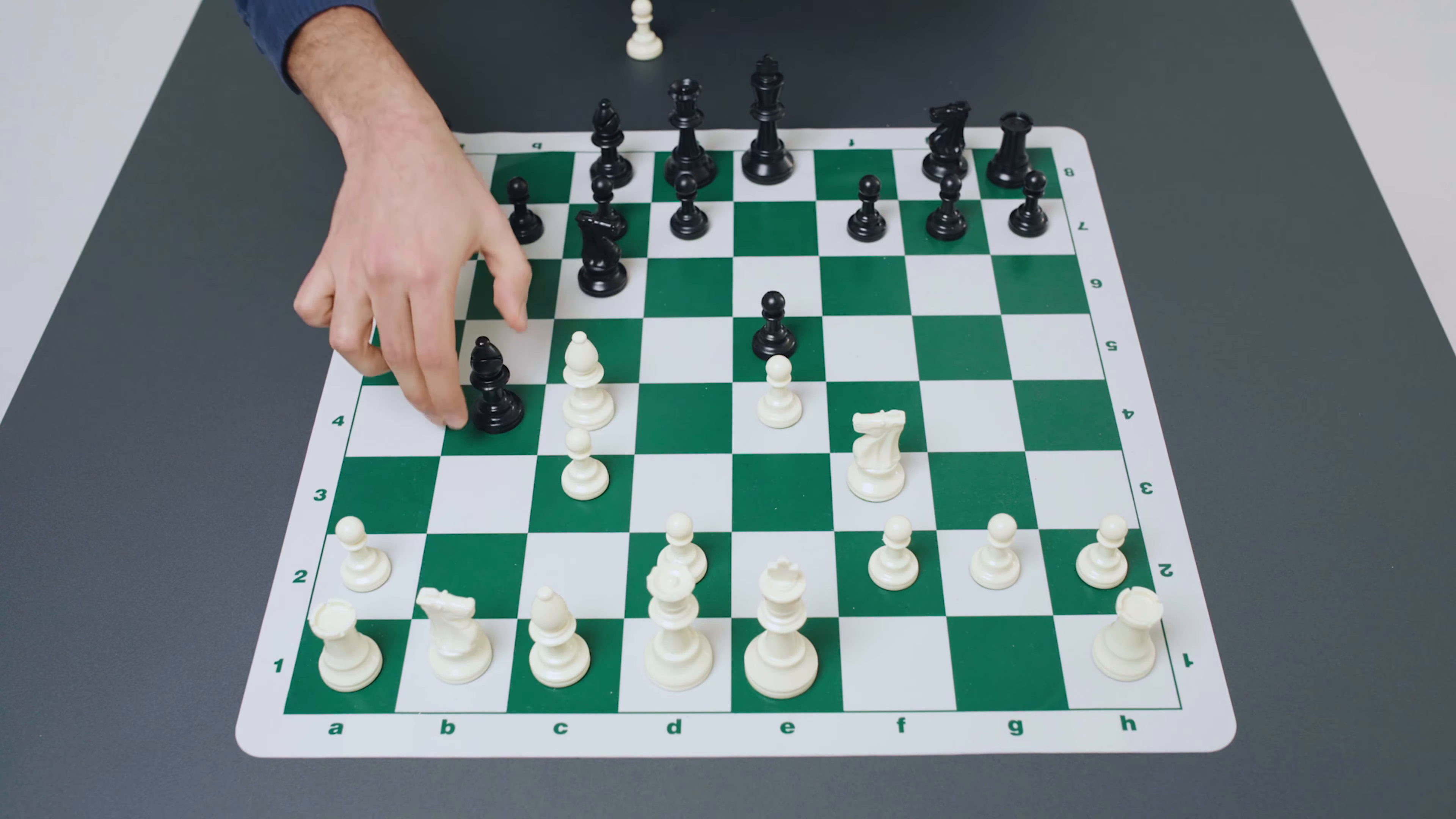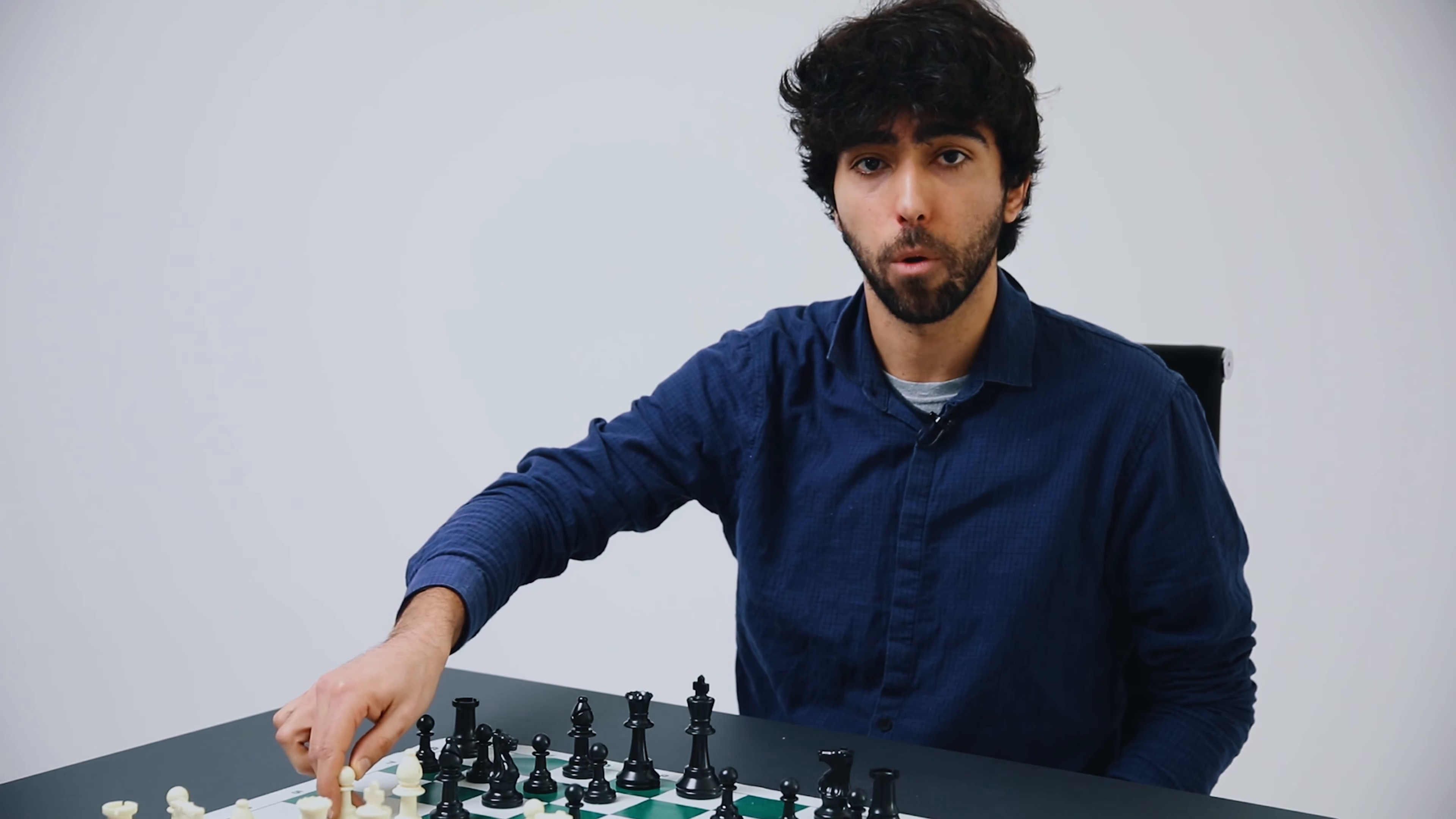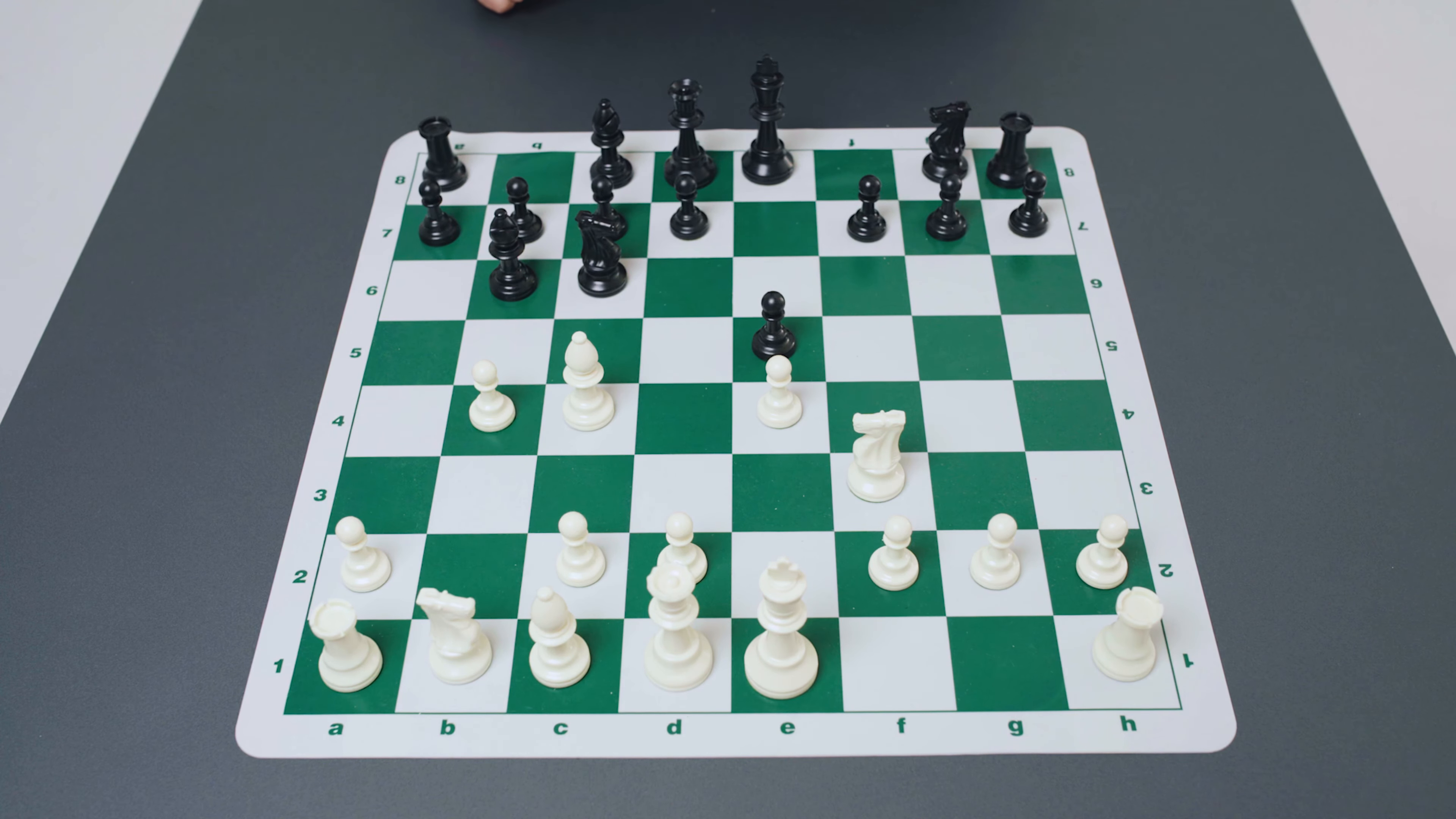So now we have looked at the giuoco pianissimo and the giuoco piano. Let's go back to the starting position of the classical variation which is after bishop to c5 and here we're going to discuss this move pawn to b4. It may seem like a very strange move to simply give up a pawn apparently for nothing but the idea is that if black captures for example with the knight then the knight is no longer defending the central pawn on e5 and this can have consequences.